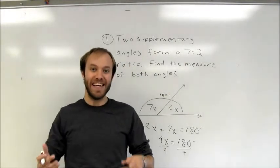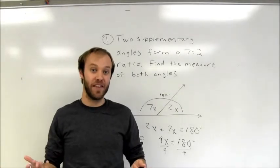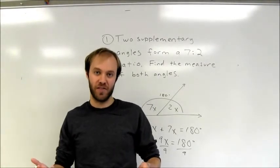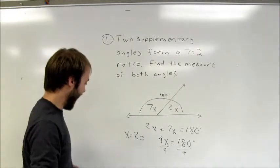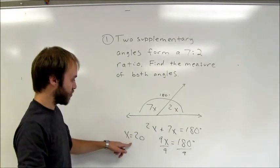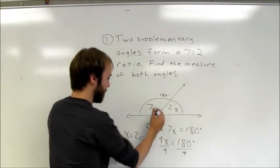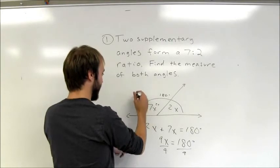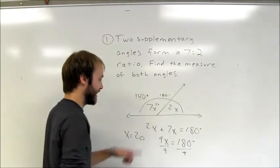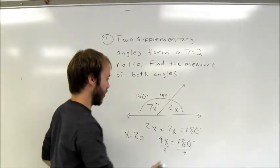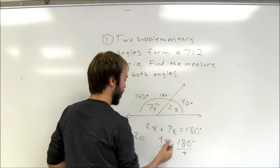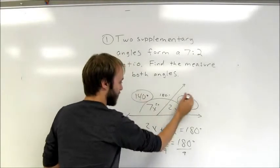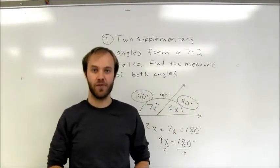At the end, the problem didn't ask for the value of the variable — it asked for the measure of the two angles. So I substitute 20 back in for x. 7 times 20 is 140 degrees, and 2 times 20 is 40 degrees. Those are the measures of the two angles.